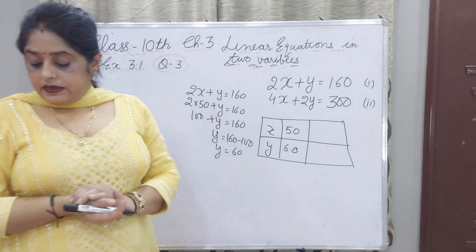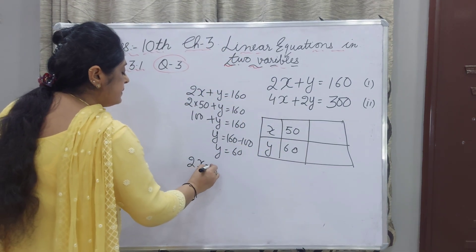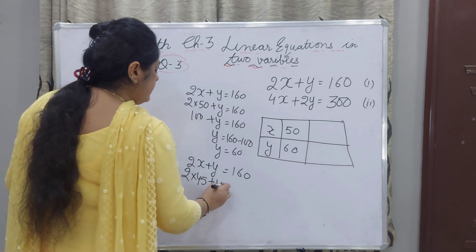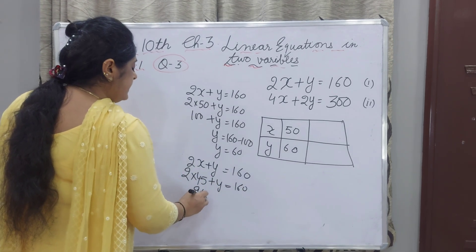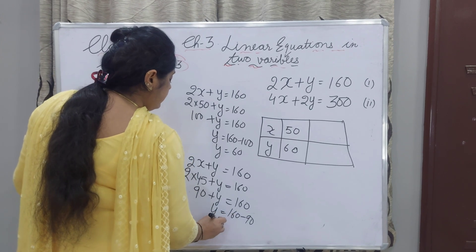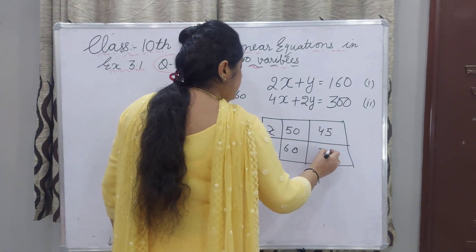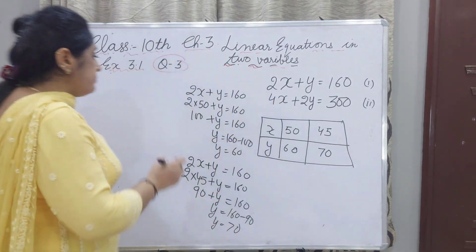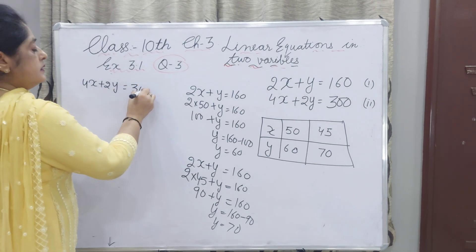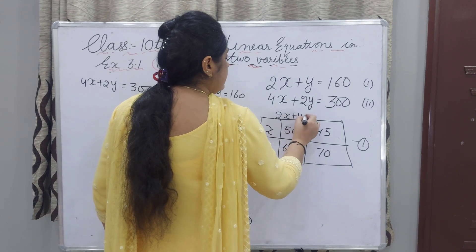Now one another value: I will take X as 45. Then 2 into 45 plus Y equals 160, so 90 plus Y equals 160, and Y will be 160 minus 90, giving Y equals 70. If X is 45, I am getting Y as 70. This table is for equation 1, which is 2X plus Y equals 160.